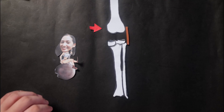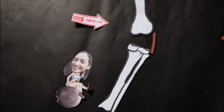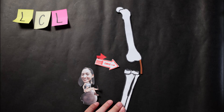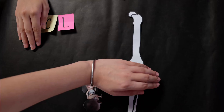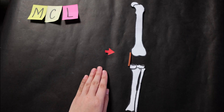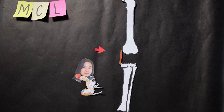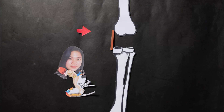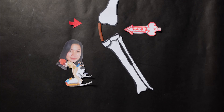Lateral collateral ligament: resists varus stress, limits anterior tibial translation, and limits excessive lateral rotation. Medial collateral ligament: restricts excessive valgus and lateral tibial rotation, and supports in resisting anterior tibial translation.